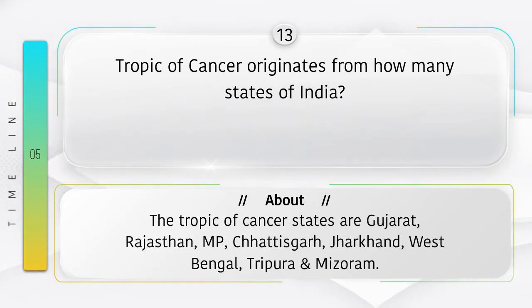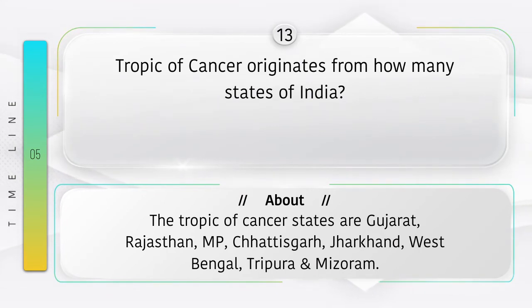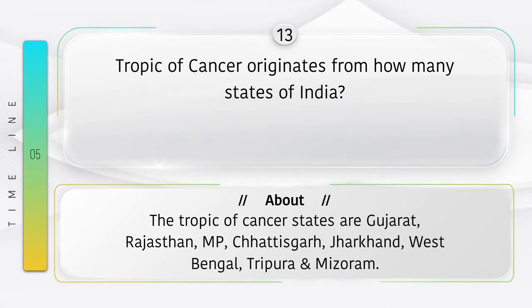Did you know? The Tropic of Cancer passes through these states: Gujarat, Rajasthan, Madhya Pradesh, Chhattisgarh, Jharkhand, West Bengal, Tripura, and Mizoram.